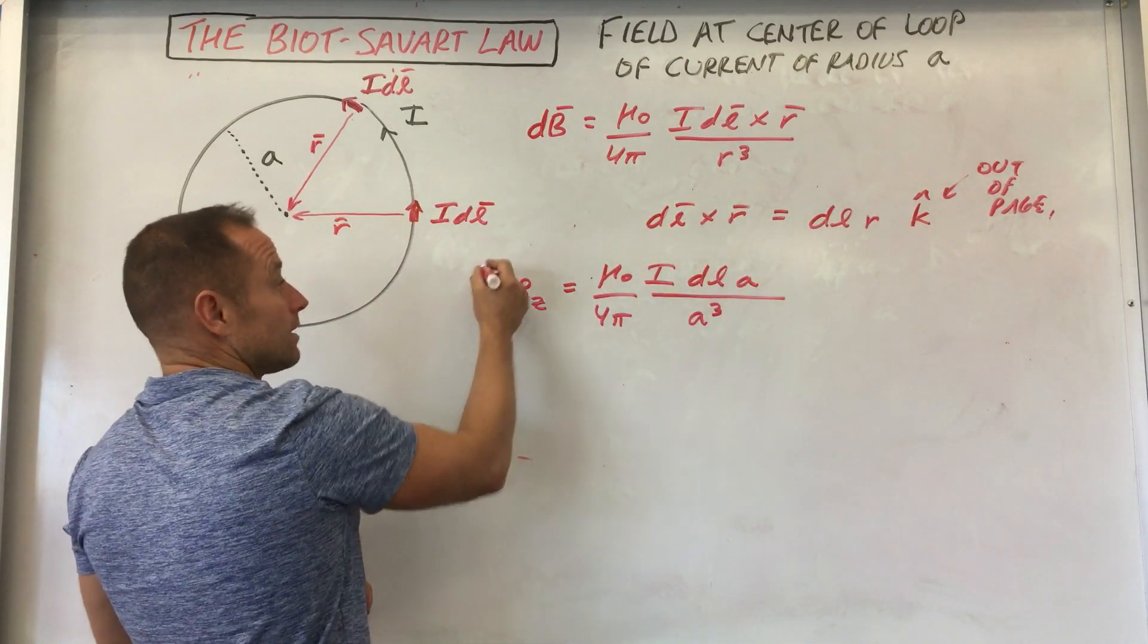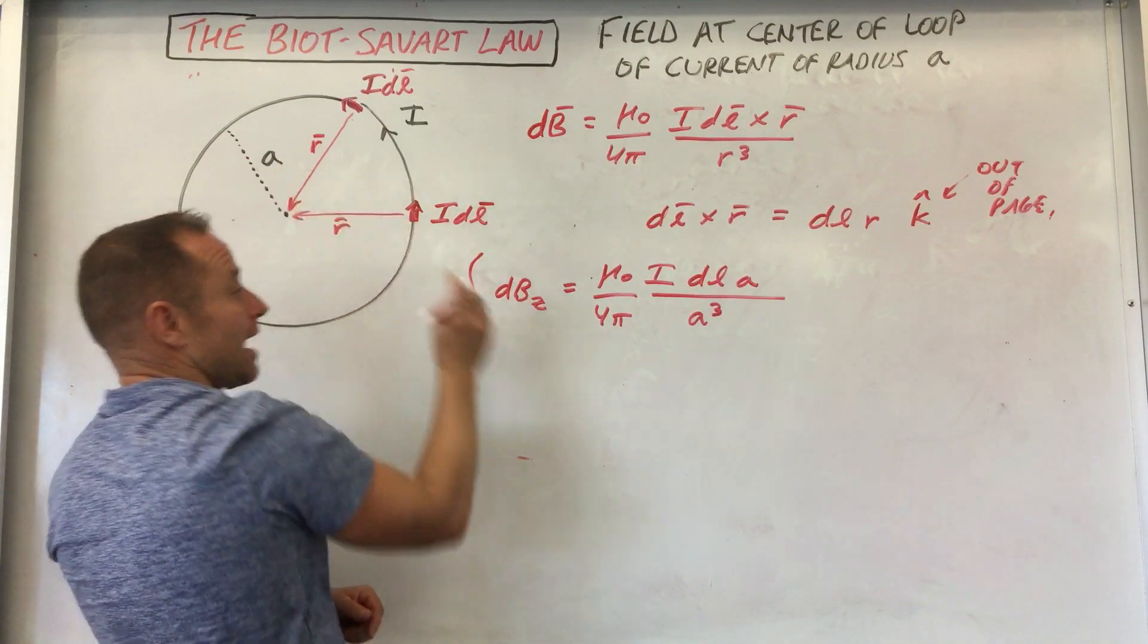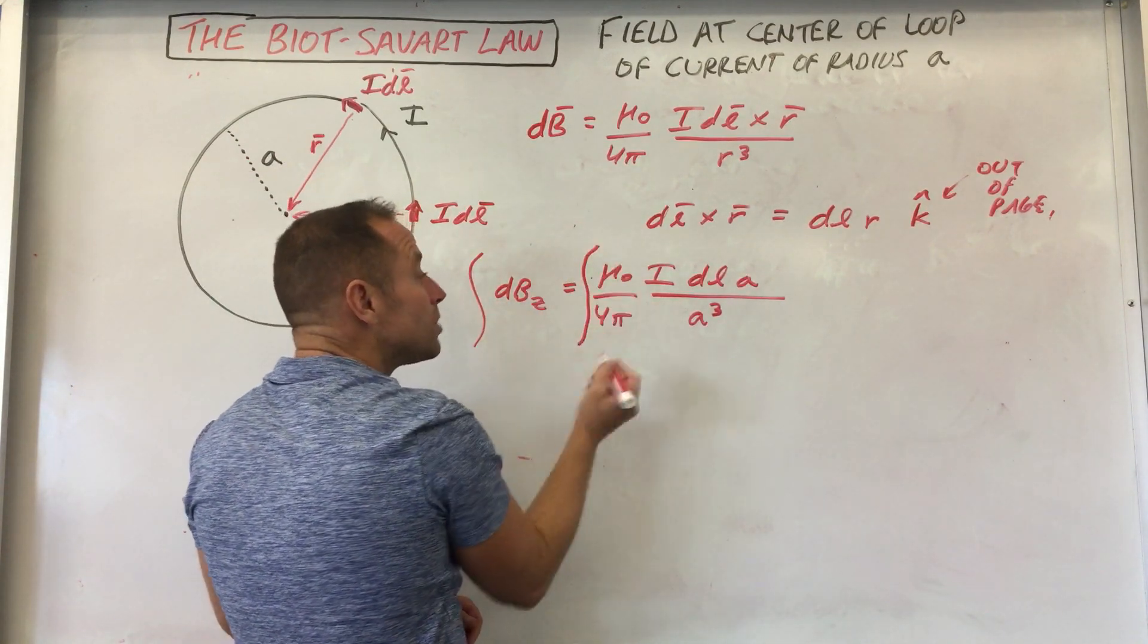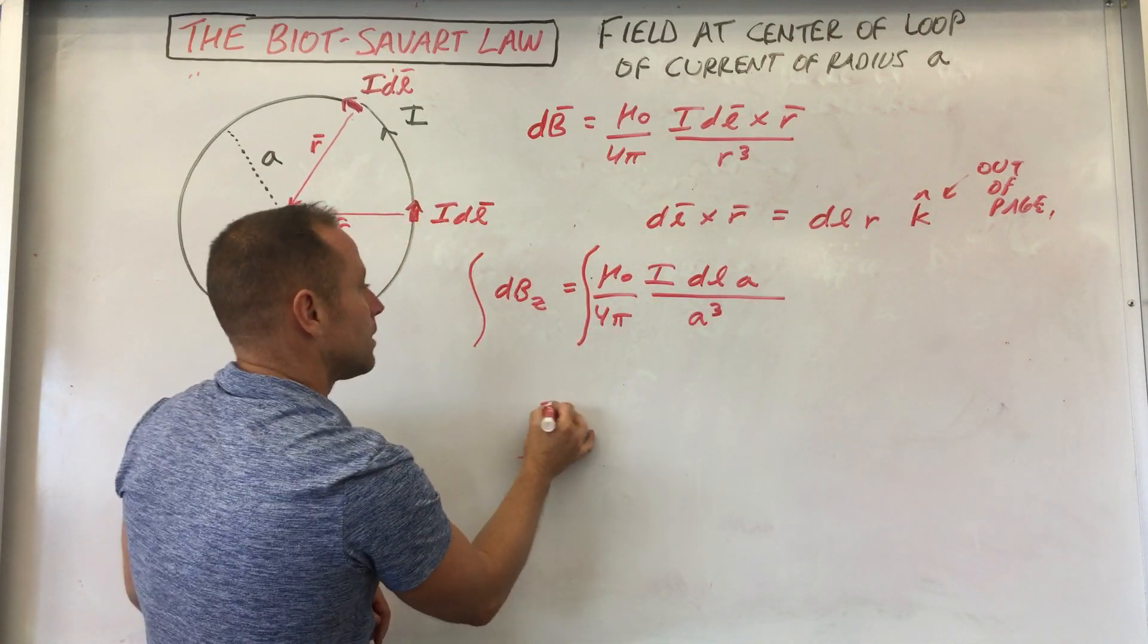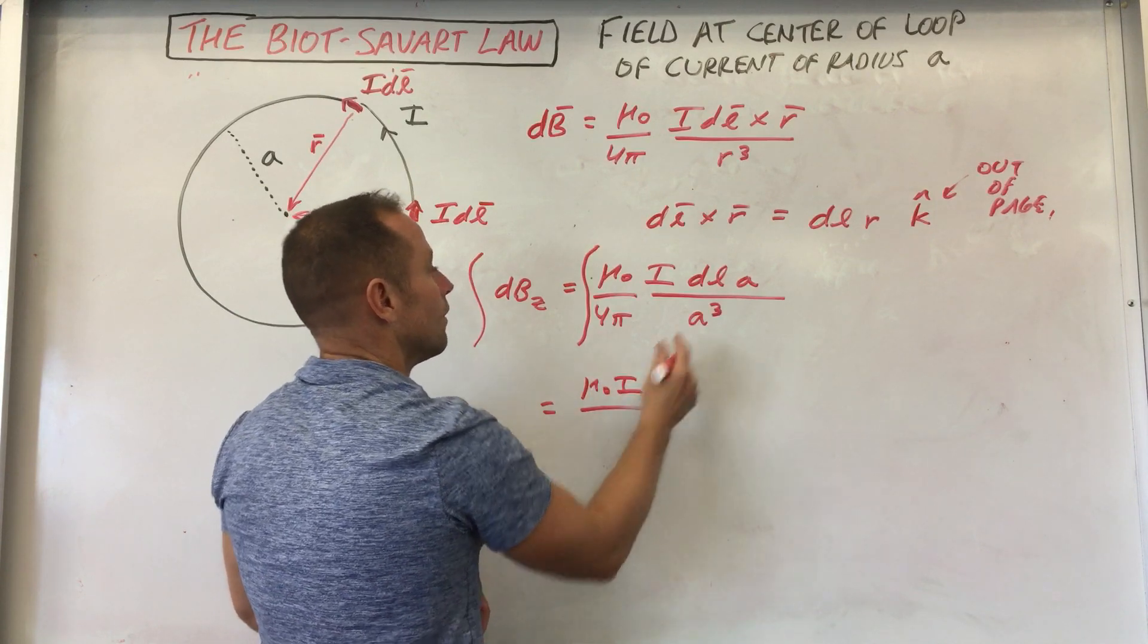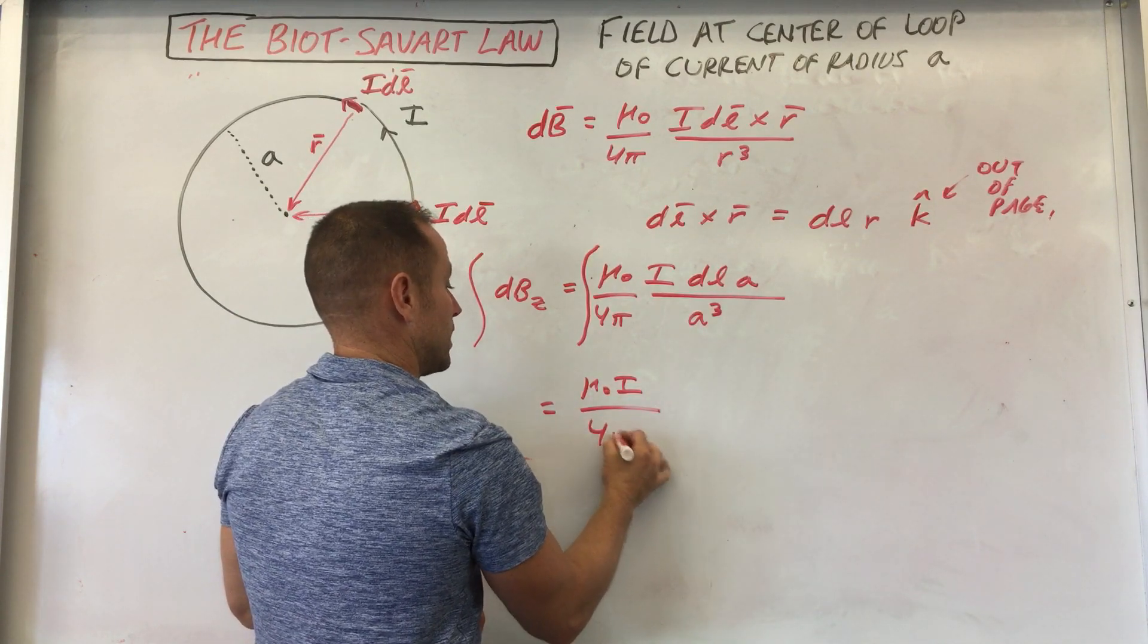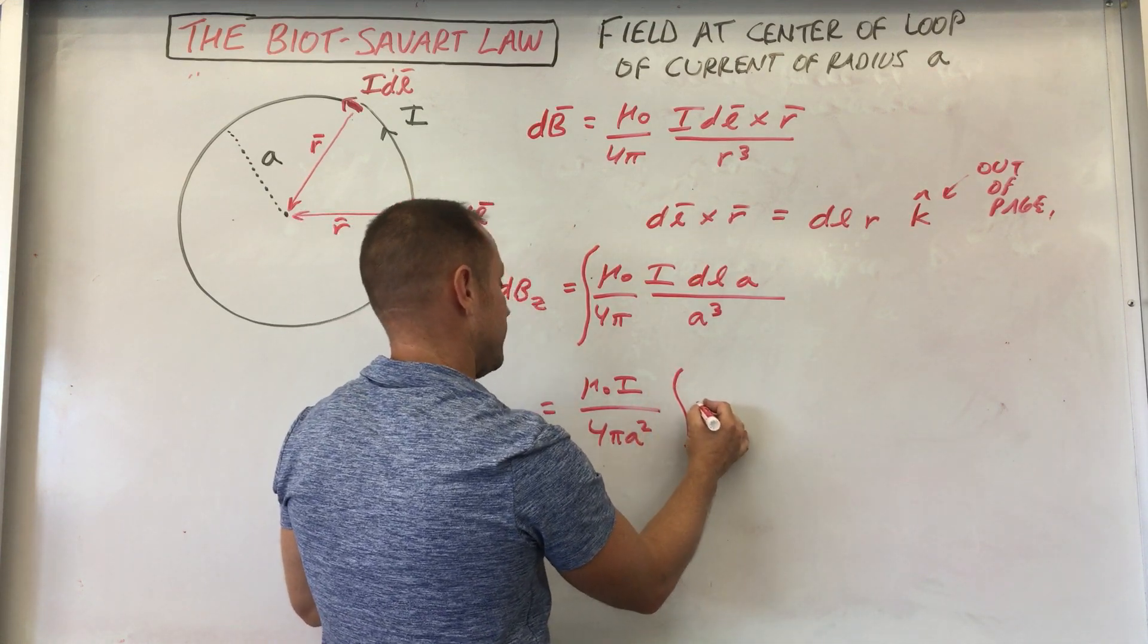Let's add all these up because all the contributions of the field always point out. So we're ready to add up. And so let's pull everything out of the integral. That's a constant. So you get mu naught I over four pi A squared. And then this is just the integral of DL.